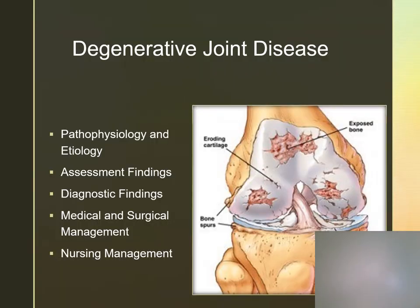Degenerative joint disease, also known as osteoarthritis, is the most common form of arthritis. We usually find this in the weight-bearing joints. These clients have had a lifetime of repeated trauma, especially to the hips, knees, spine, and hands. The cartilage becomes thin, rough, and ragged, and then the bone surfaces begin to rub together. They may develop bone spurs, cysts, or osteophytes in the body's attempt to repair itself.